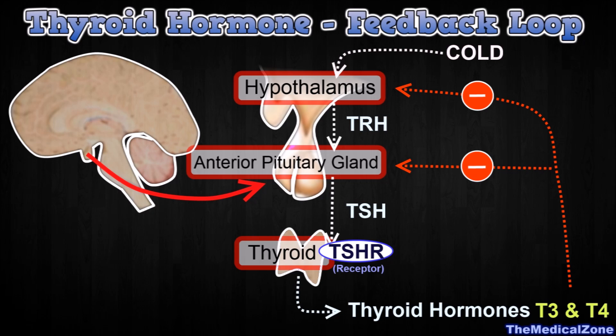It should also be mentioned that cold temperatures stimulate the release of Thyrotropin-Releasing Hormone by the hypothalamus, which means that the thyroid hormones will also be elevated to increase the basic metabolic rate. This causes the body to produce more heat to compensate for the cold temperature.